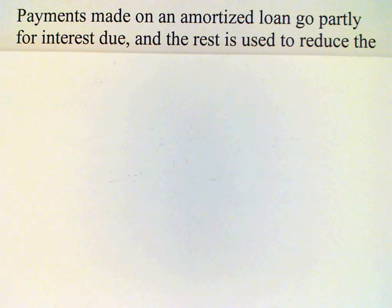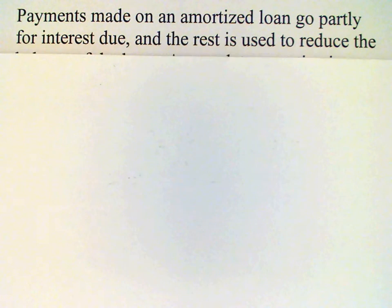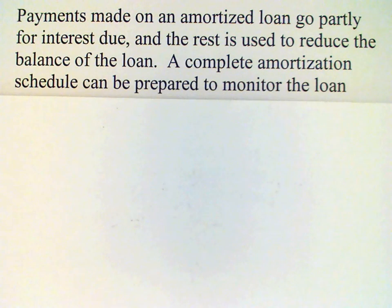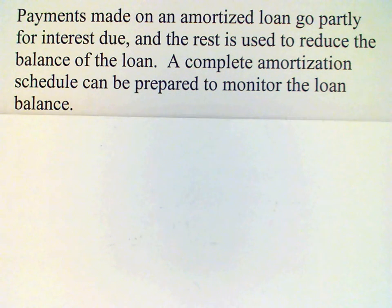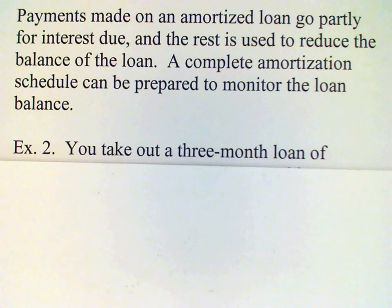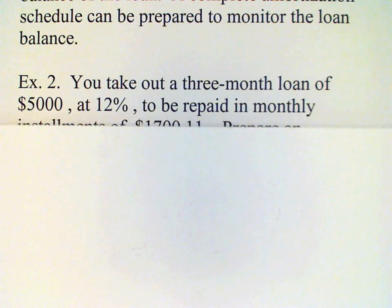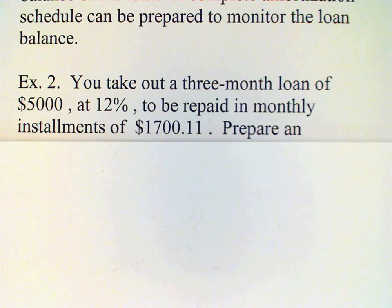As you probably know, the monthly payment that you make on your car or on your house goes partly to pay the interest and partly to reduce the loan balance. If you're interested in how these break down, you can look at the complete amortization schedule for the loan. For example, you take out a three-month loan for $5,000 at 12% annual rate, and you're going to repay this loan in three monthly installments of $1,700.11, and we need to prepare the amortization schedule.